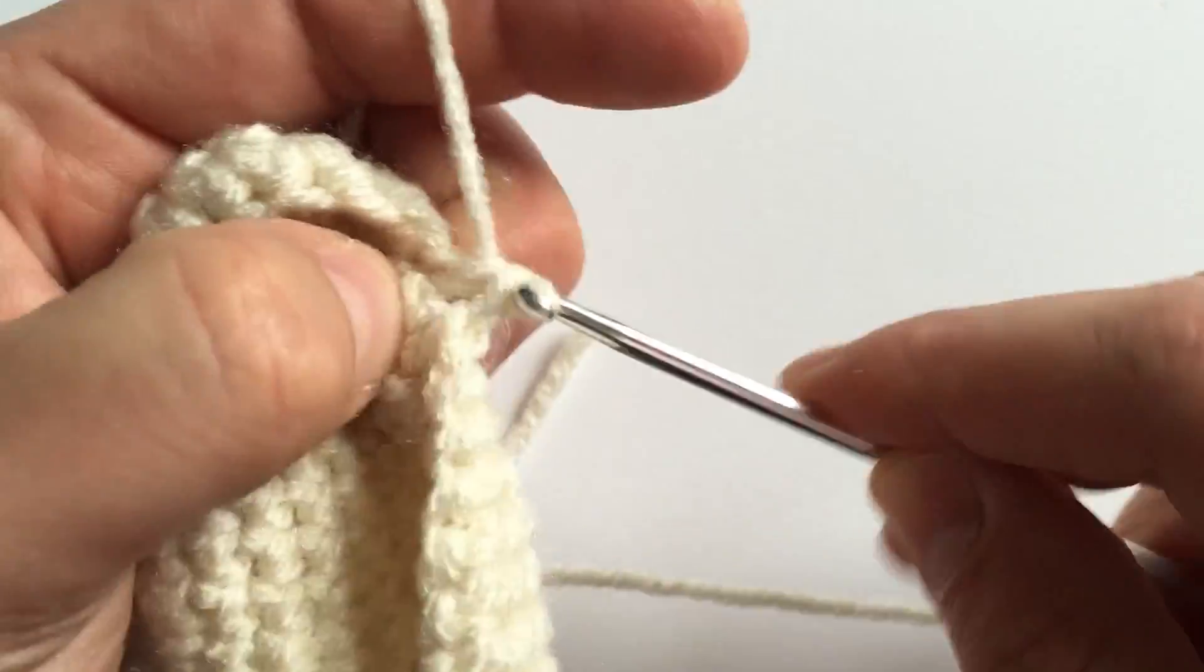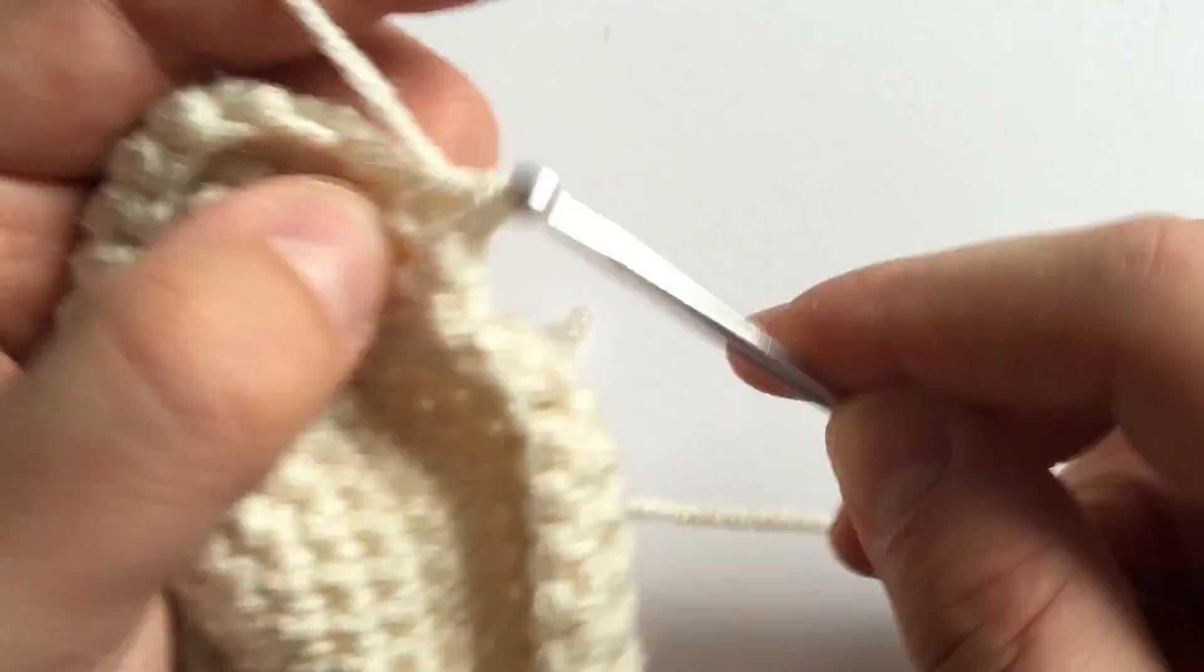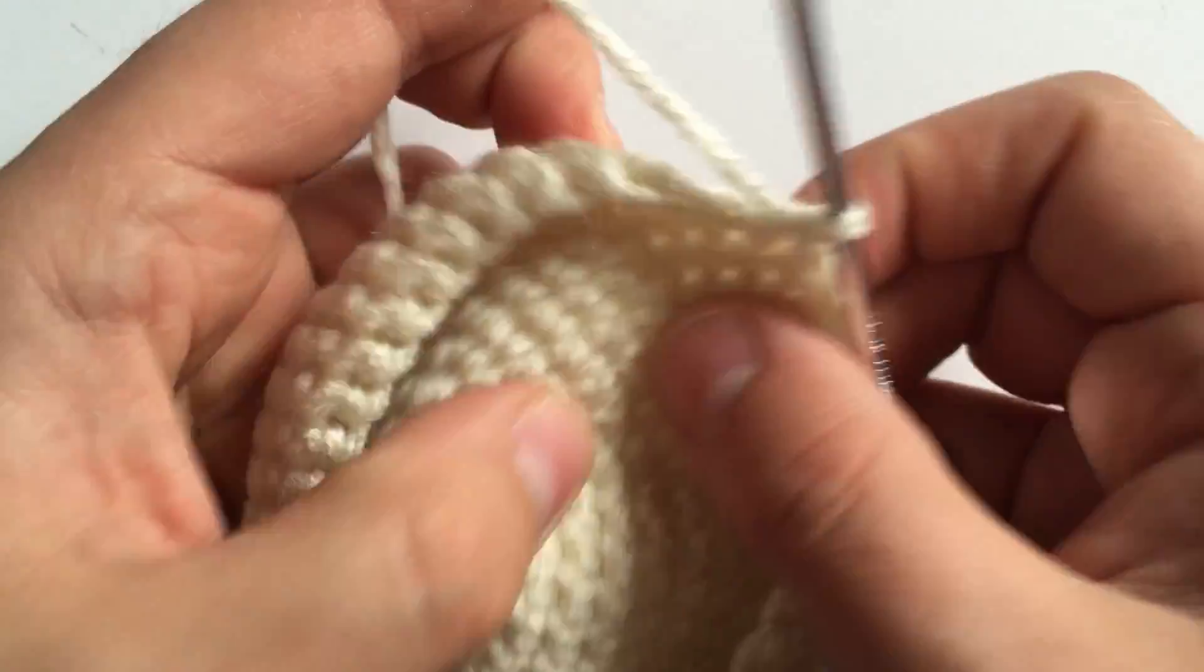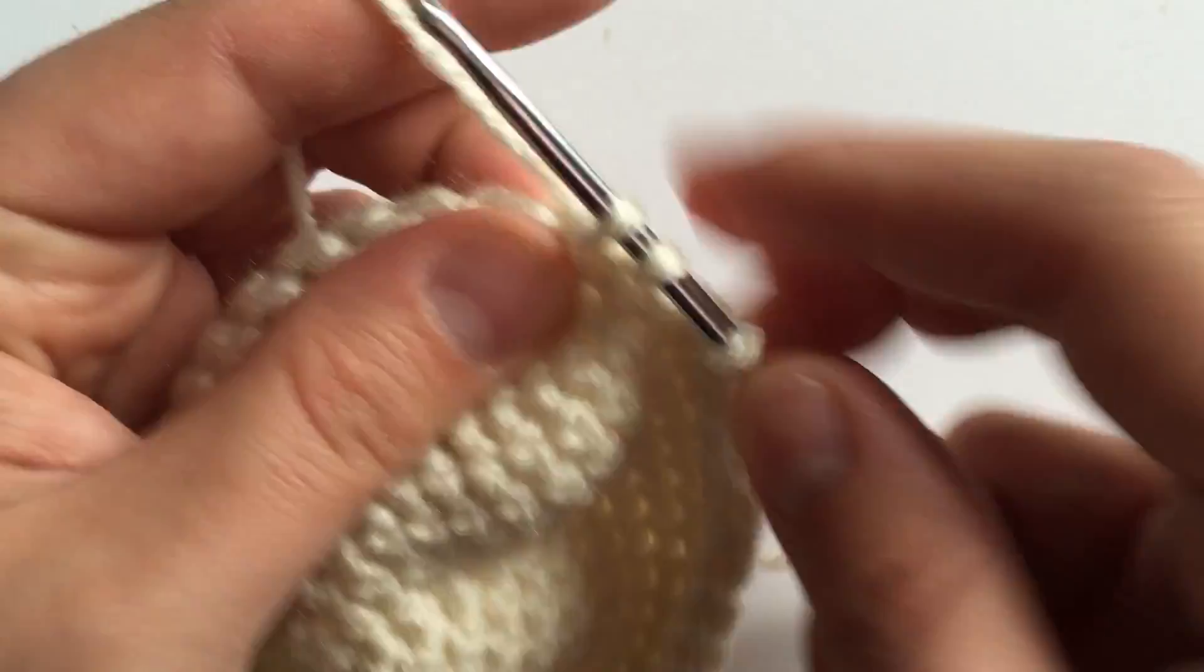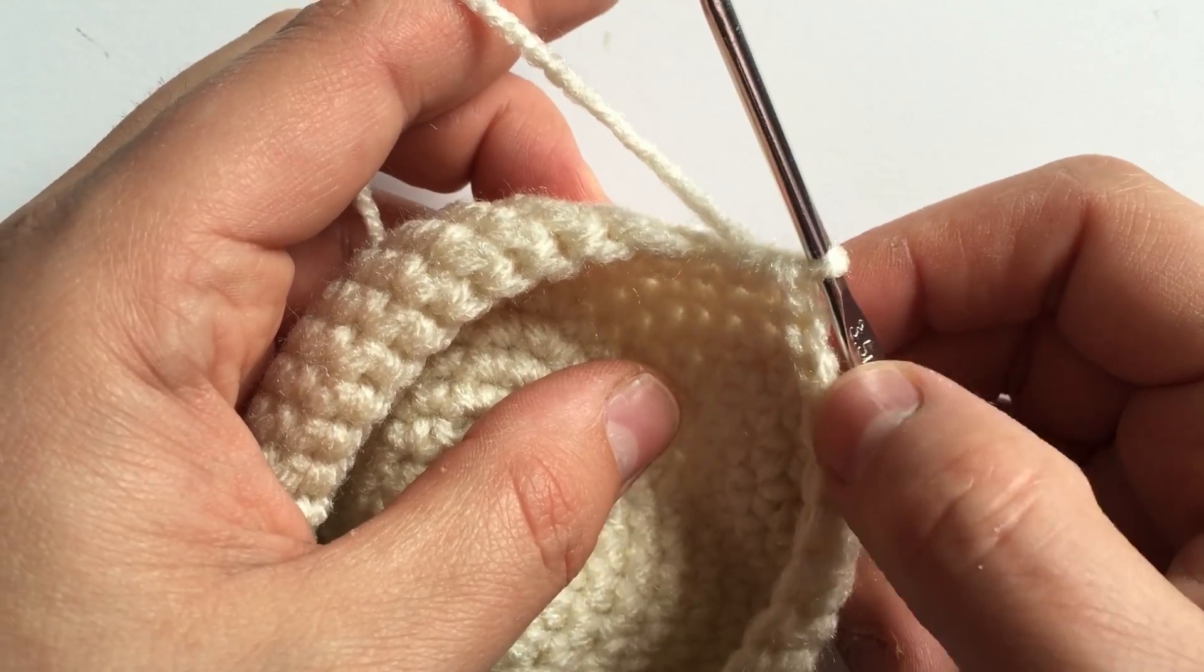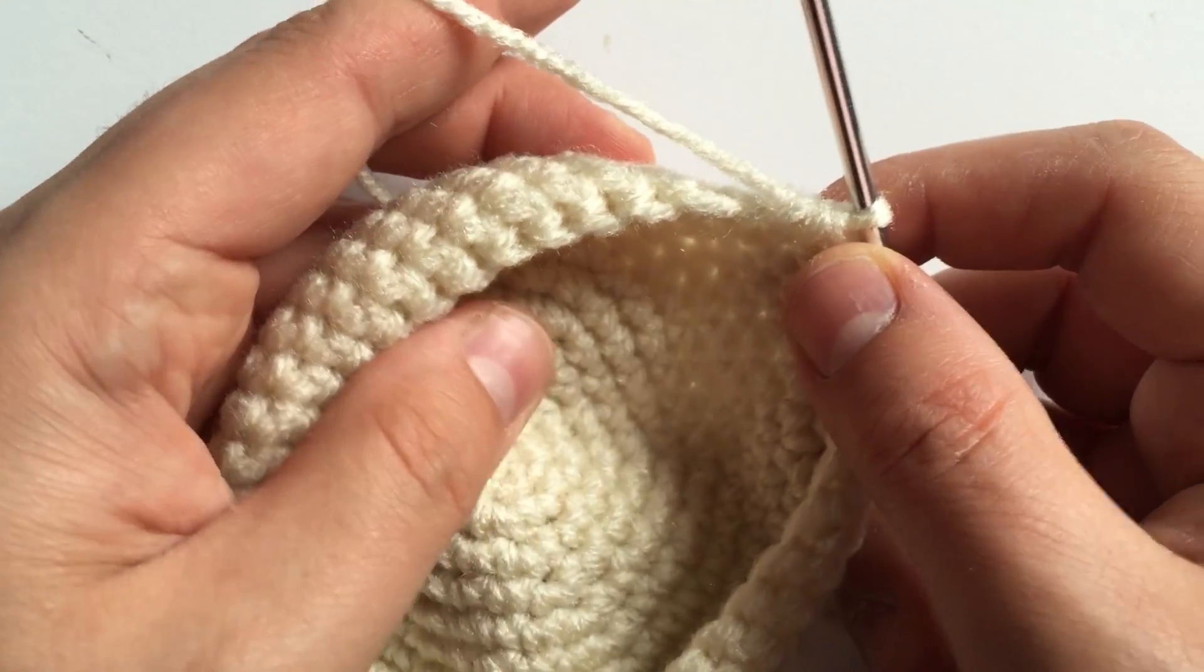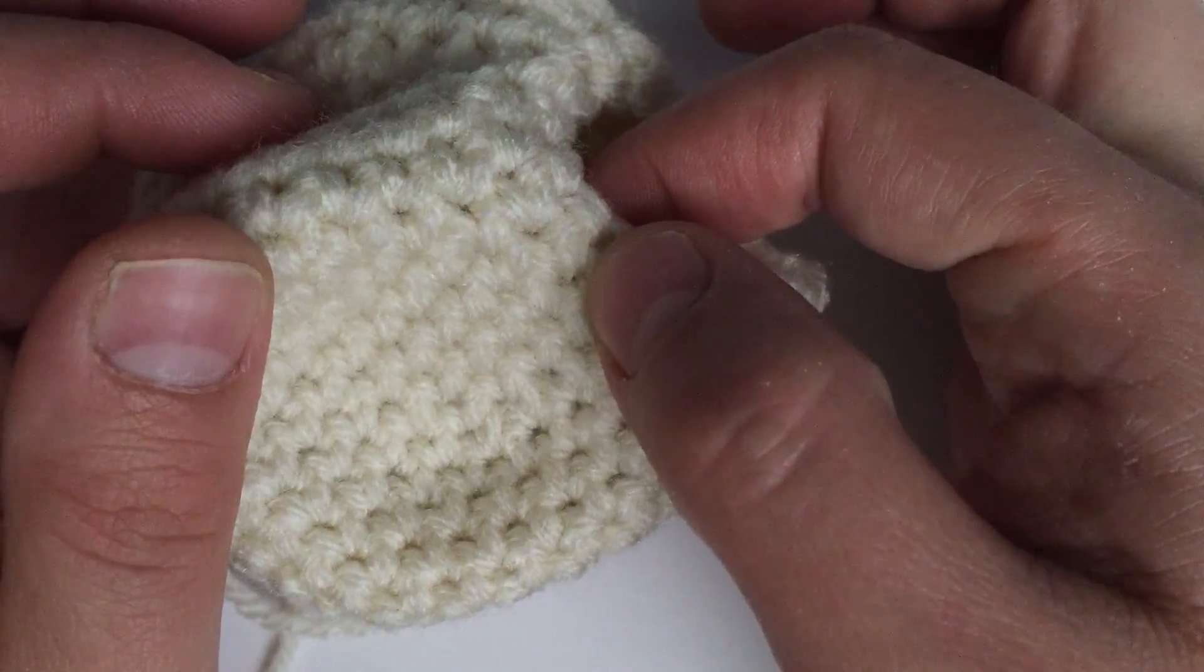Now we're going to do single crochet five again. Loop, loop, pull through all three. Now we have a total of 12. We need to continue this pattern until we end up with 36, following the decreases which are the same as the increases for the top, just opposite.